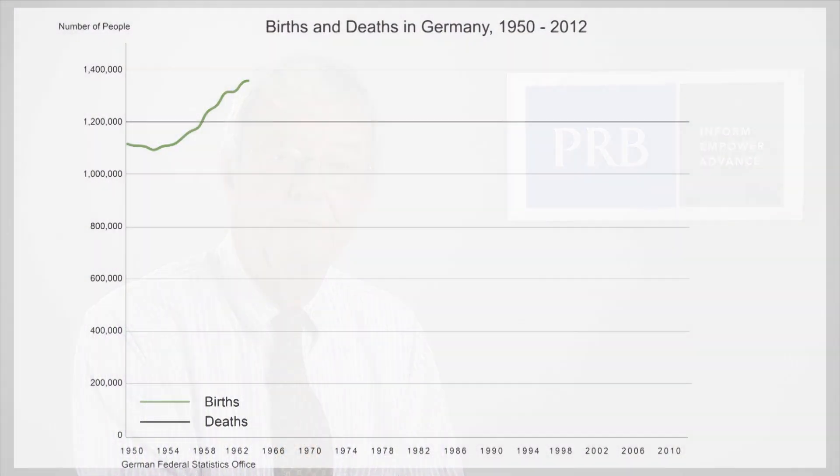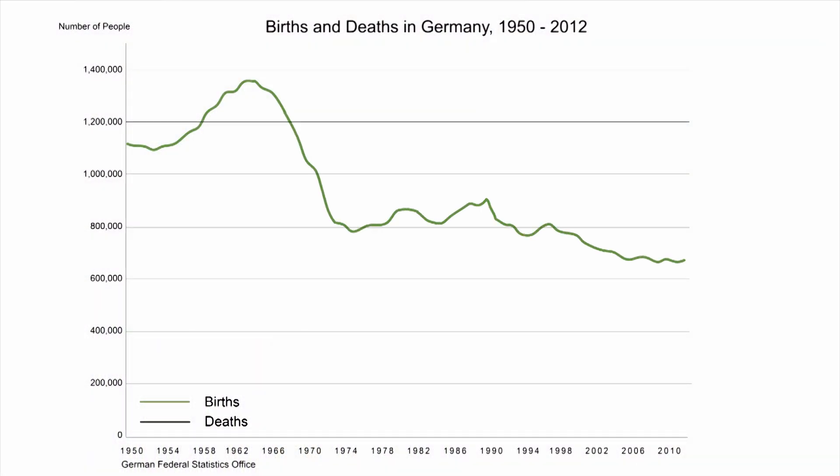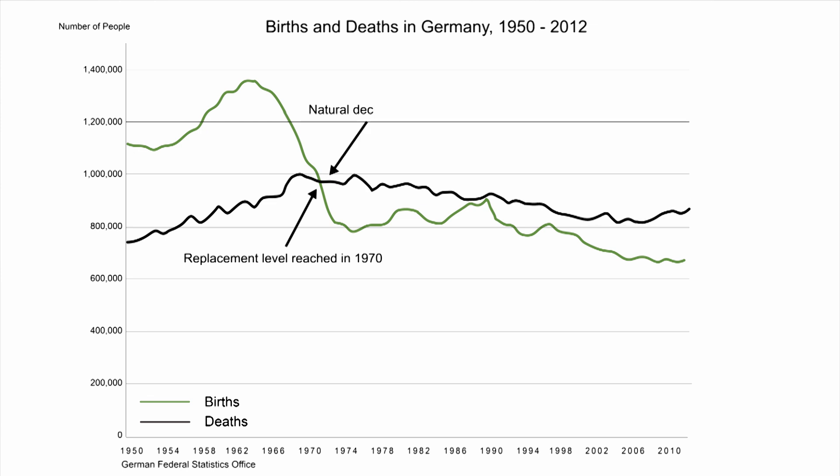Countries can reach replacement level without a lot of population momentum. Germany reached replacement level in 1970 — about 40 years ago — but deaths began to exceed births only two years later. So there was no built-in momentum whatsoever in terms of births and deaths. Why? Because Germany has a much different fertility history than Bangladesh or Uganda. Fertility came down over a much longer period, with interruptions from the war, so it reached replacement and zero population growth almost simultaneously.